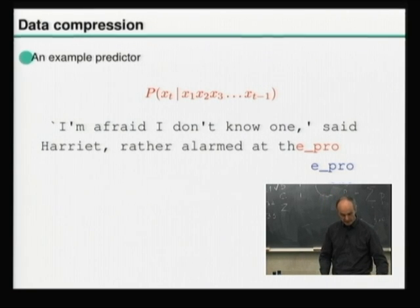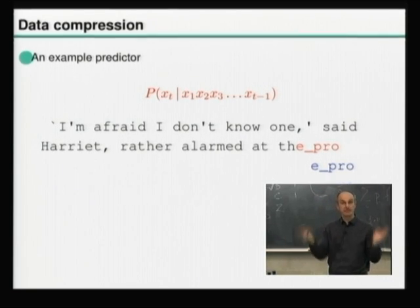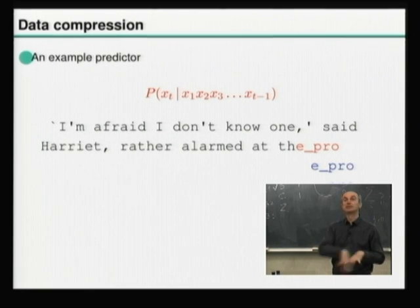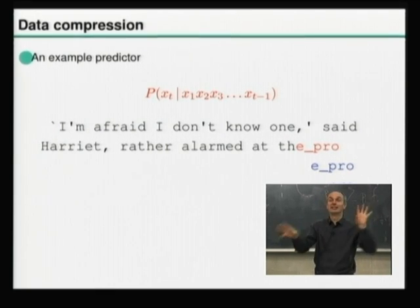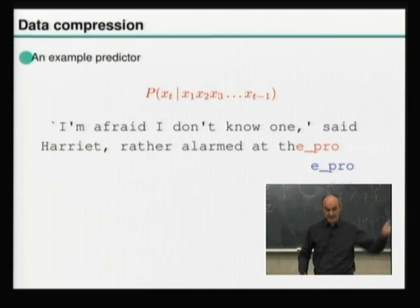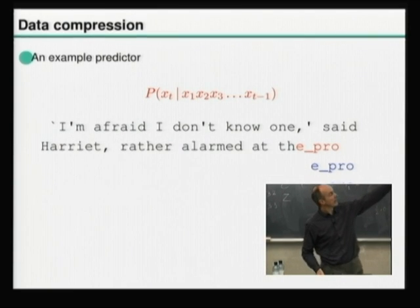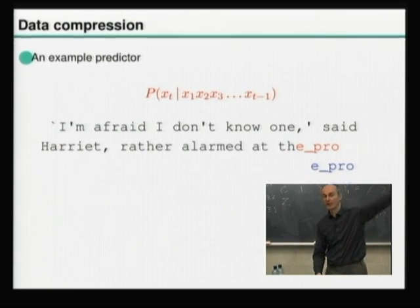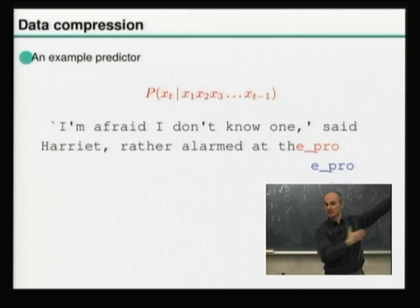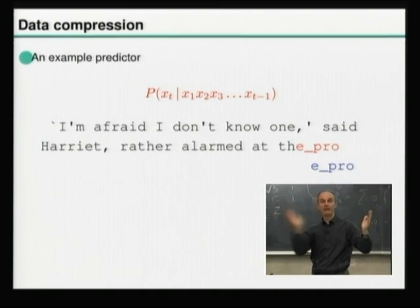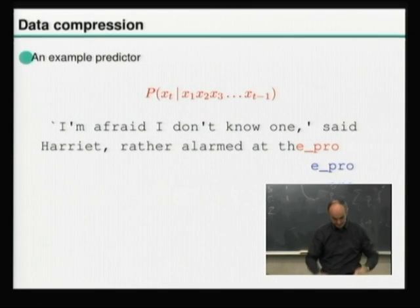The question was: does PPM learn the six-gram statistics of the entire document and then compress, or does it do it on the fly? The answer is it does things on the fly, just like the identical twin audiences. When predicting in a given context, we count how often that context has happened before now - we don't look ahead into the future. Predictions are based only on what has already been seen.